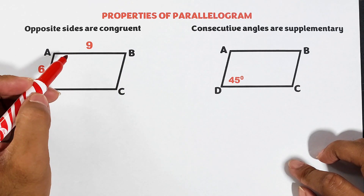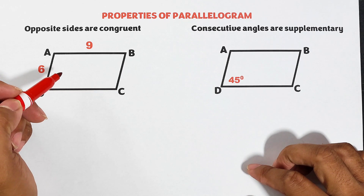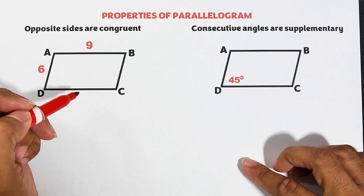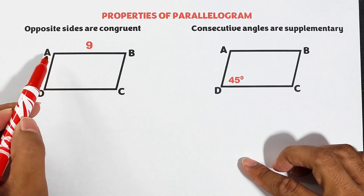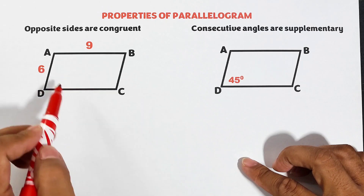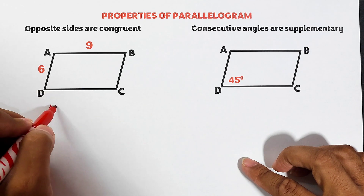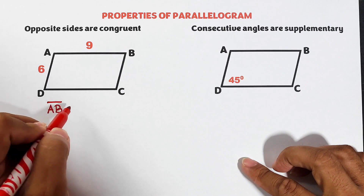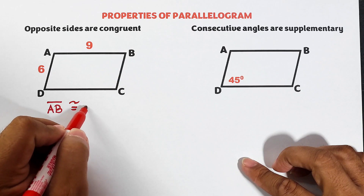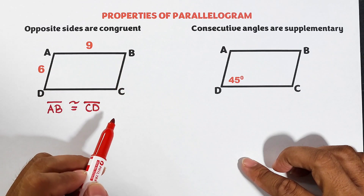Let's focus first on opposite sides being congruent. In a parallelogram, the two opposite sides that are parallel are also congruent. So we can say that given parallelogram ABCD, we can say that side AB is congruent to side CD.